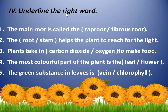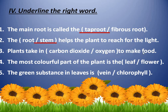Now next, underline the right word. The main root is called the tap root or fibrous root — the correct answer is tap root. The root or stem helps the plant to reach for the light, meaning upright position — the answer is stem. Plants take in carbon dioxide or oxygen to make food — it is carbon dioxide. The most colourful part of the plant is flower. The green substance in the leaf is chlorophyll.